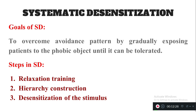Systematic desensitization therapy follows three steps. The first step is relaxation training, the second step is hierarchy construction, and the third step is desensitization of the stimulus — removing the stimulus that causes the avoidance behavior.